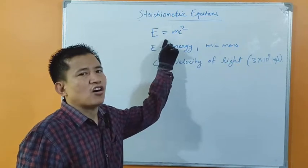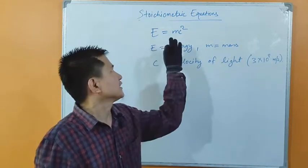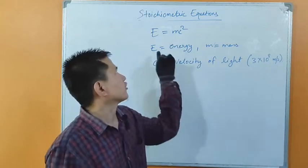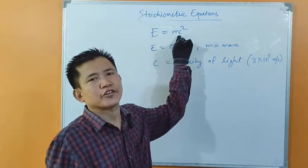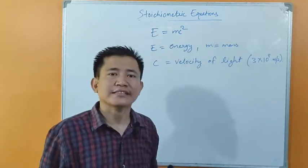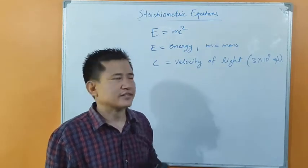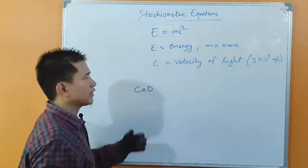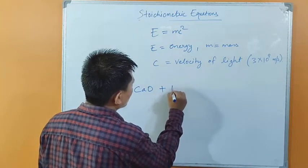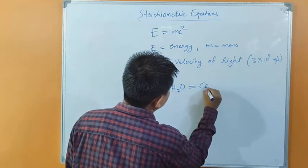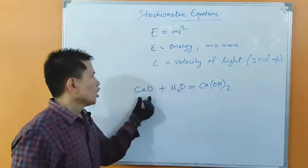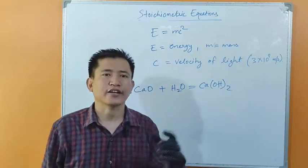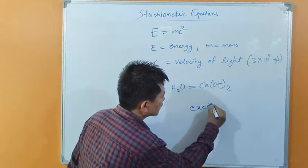According to this equation, we can see that mass can be converted into energy, because energy equals mass into velocity of light squared. For example, quicklime — calcium oxide — reacts with water to produce calcium hydroxide, which we call slaked lime. When quicklime reacts with water to produce slaked lime, this is an example of an exothermic reaction.